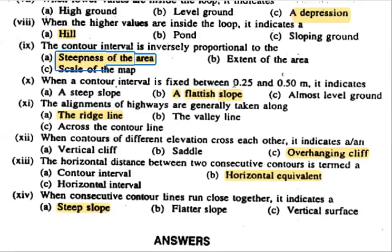Next question: A contour interval between 0.25 to 0.5 meters indicates a flat slope area. So for a flat slope, the contour interval is 0.25 to 0.5 meters.